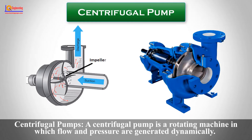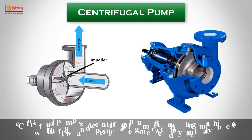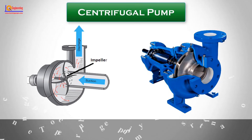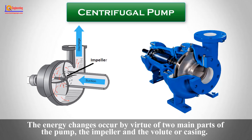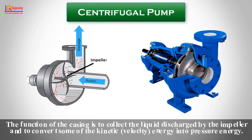A centrifugal pump is a rotating machine in which flow and pressure are generated dynamically. The energy changes occur by virtue of two main parts of the pump: the impeller and the volute or casing. The function of the casing is to collect the liquid discharged by the impeller and to convert some of the kinetic energy into pressure energy.